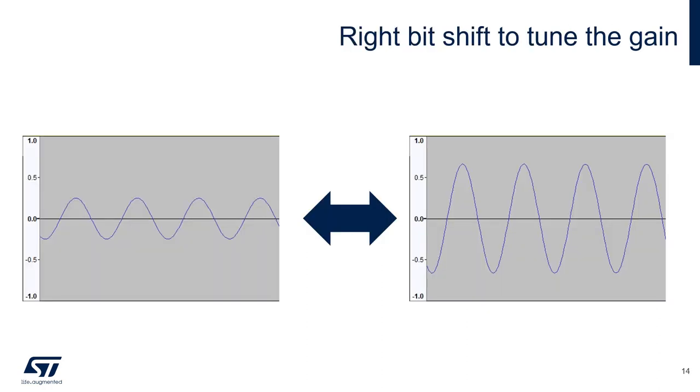The second reason to use the right bit shift is for gain control. Being able to control the dimension of the output data basically allows tuning of the gain that is added to the microphones.